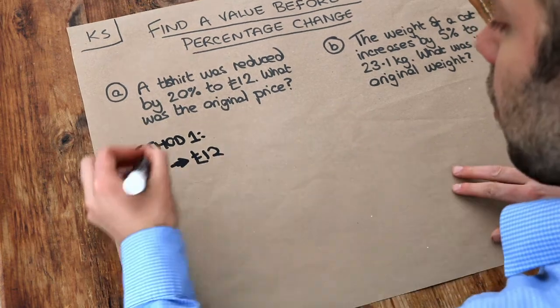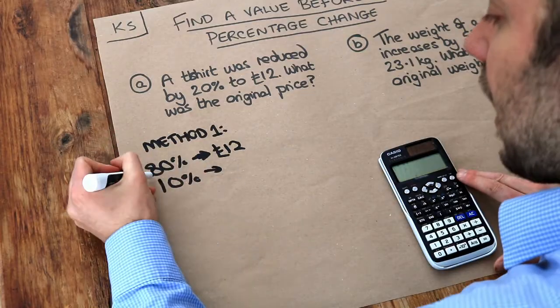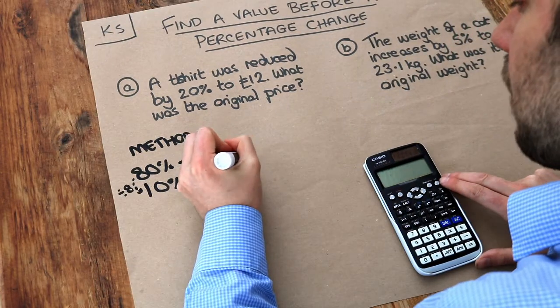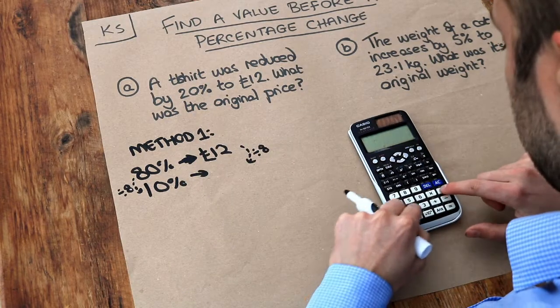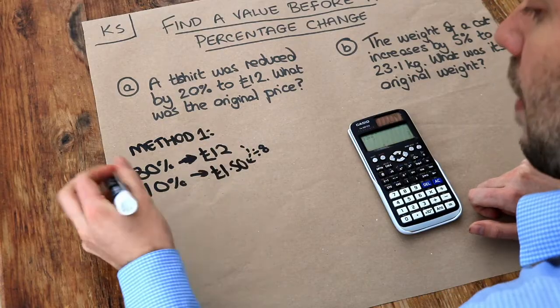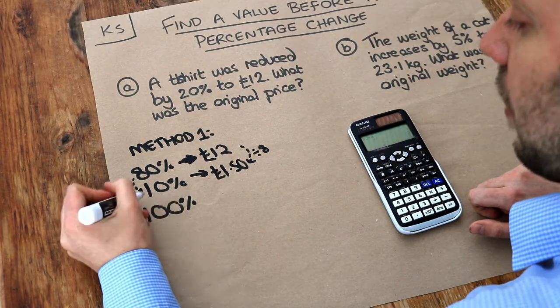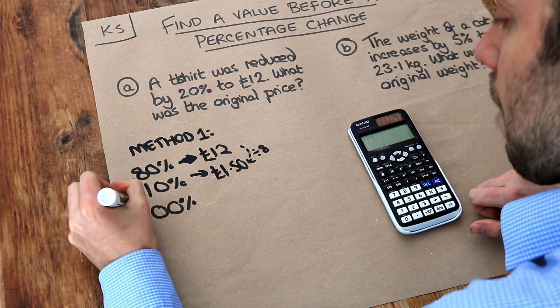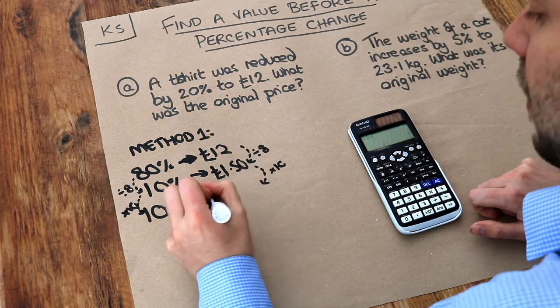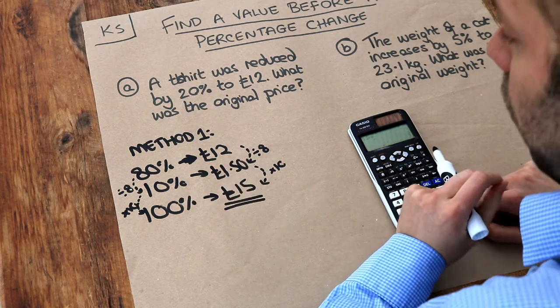And then we just have to work our way back to 100%, the full value of the t-shirt. Now one way we could do it is to go via 10%. So to work out 10%, notice that this is getting 8 times smaller and therefore it would be 8 times less than value. So we do 12 divided by 8 is £1.50. And then we need to get to 100%. So to get from 10% to 100%, well this is 10 times bigger. So we have to times this by 10 as well. And £1.50 multiplied by 10 is £15. So the original cost of the t-shirt was £15.